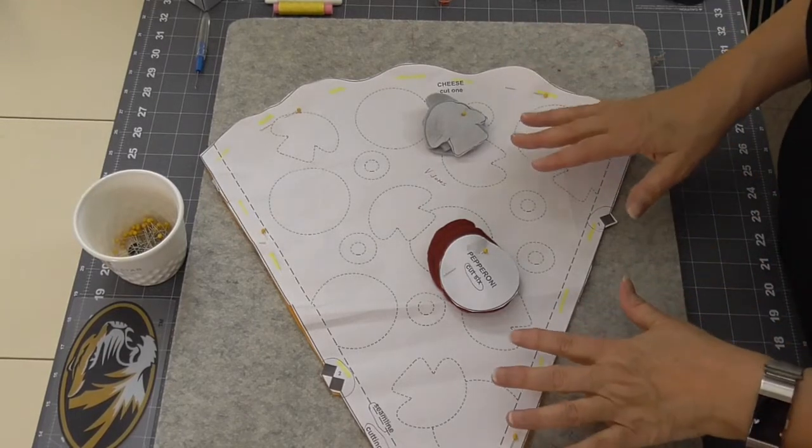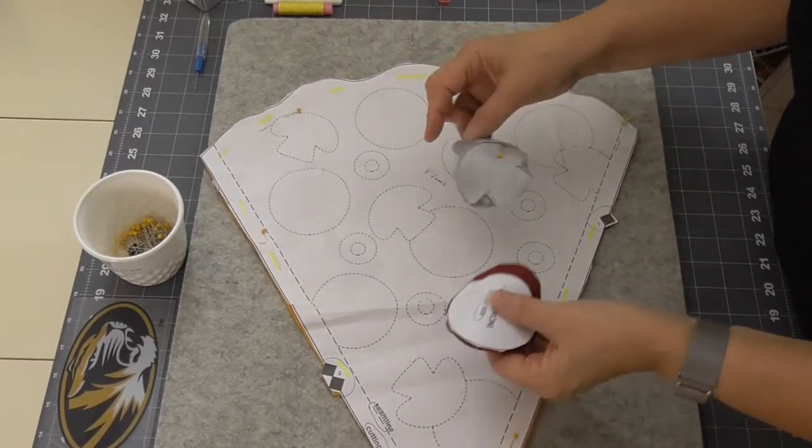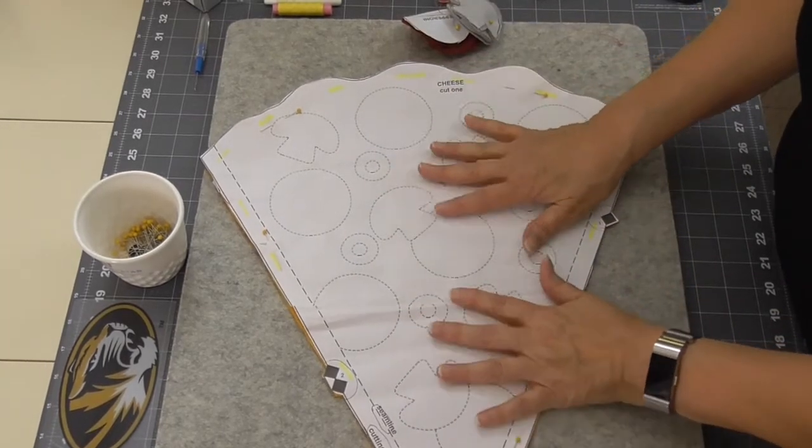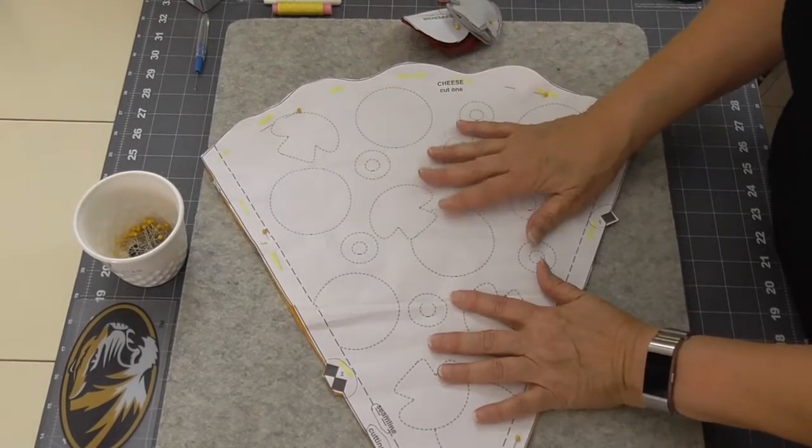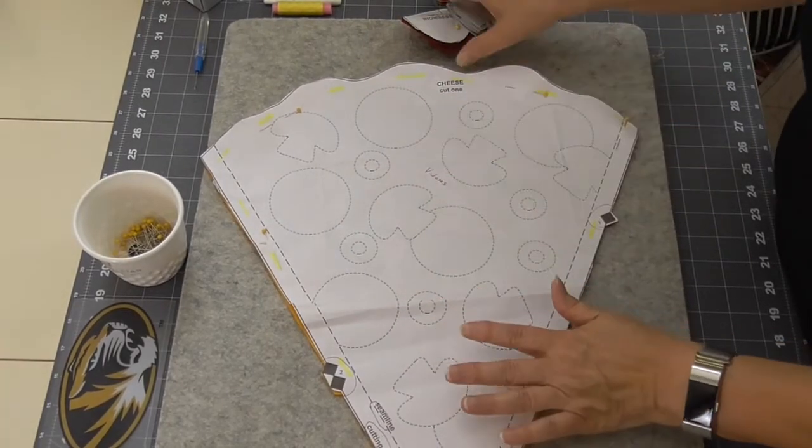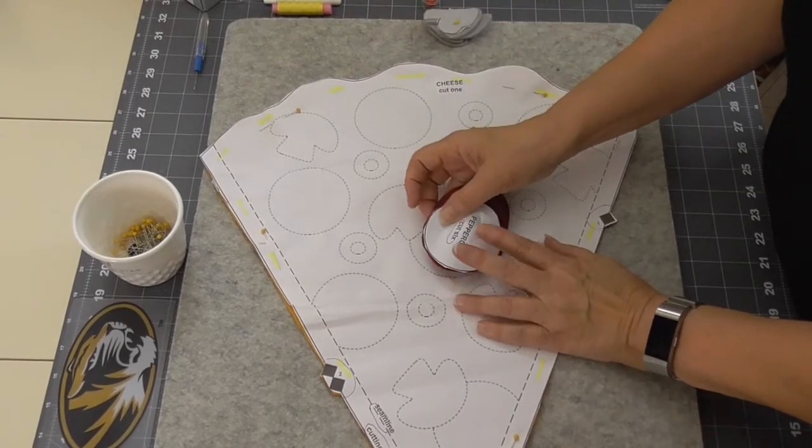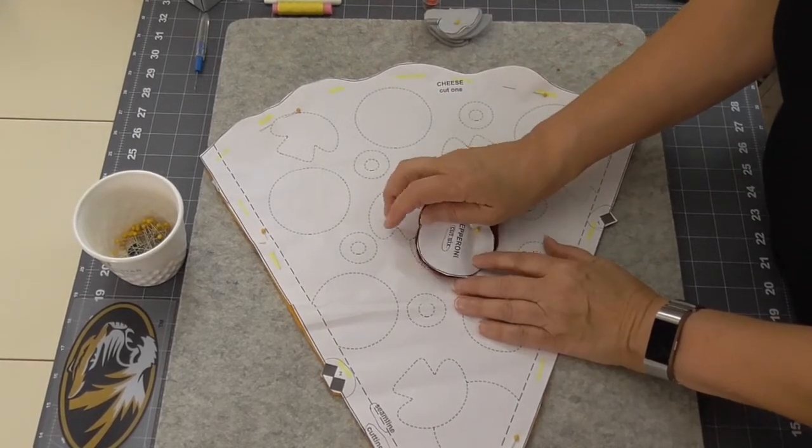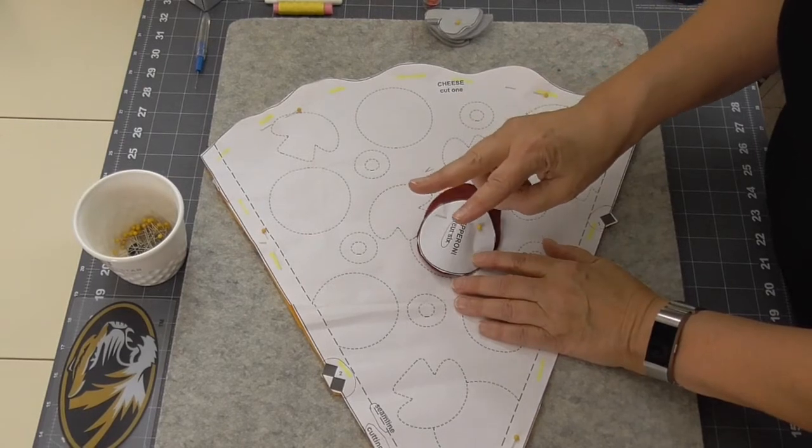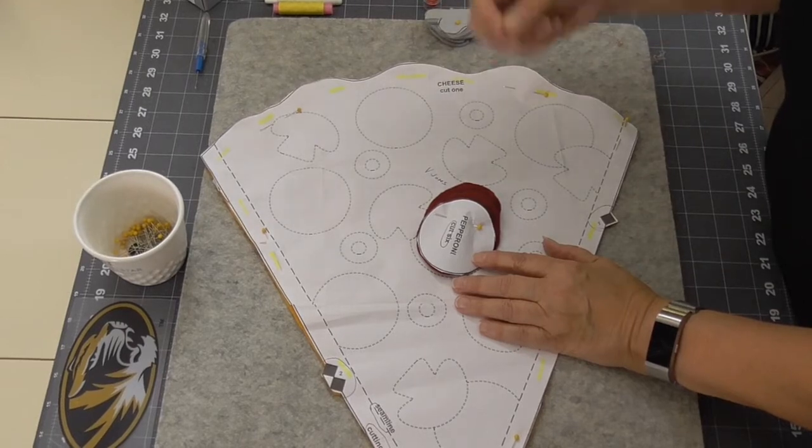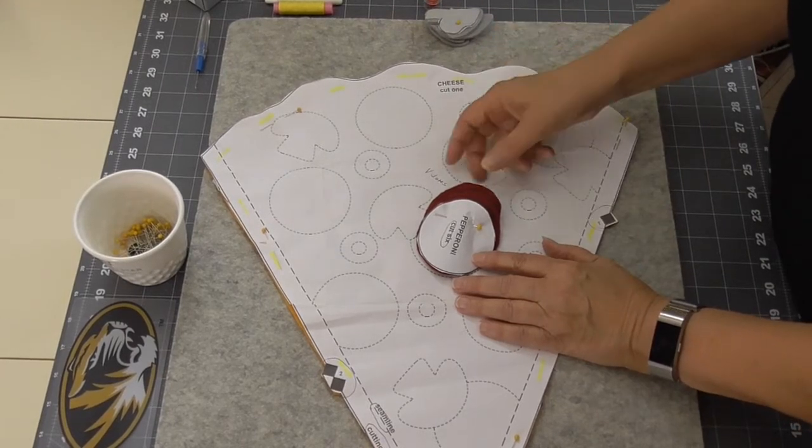And my next thing is to put my pepperoni and my mushrooms onto the cheese. The cheese goes on after the other ones are there. And the reason that I'm doing that is if I attach pepperoni to the cheese, I'm only going through two layers. If I attach these after the cheese is attached to the pillow, then I have to go through three layers and it makes it a lot harder.